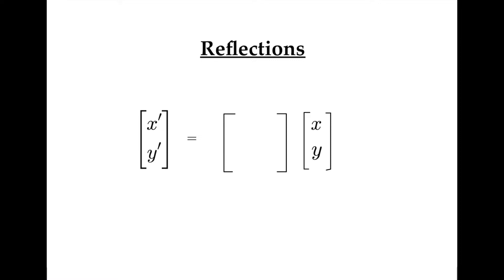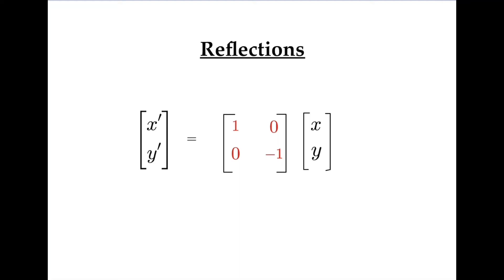When it comes to reflection in the y-axis, it is the x-value that is multiplied by minus one and the y-value that is unchanged. So these numbers on the main diagonal are swapped around.